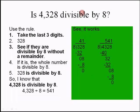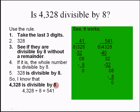Let's go to the next one and find out: is 4,328 divisible by 8? Let's use the rule — we have to take the last three digits. The last three digits in the number are 328. We take that number and see if it is divisible by 8 without a remainder. 328 divided by 8: the remainder is 0. So yes, the last three digits are divisible by 8.